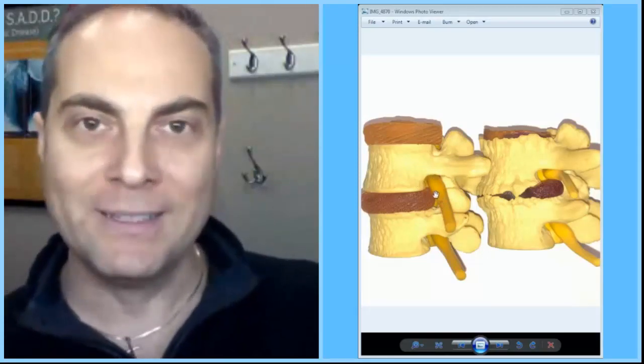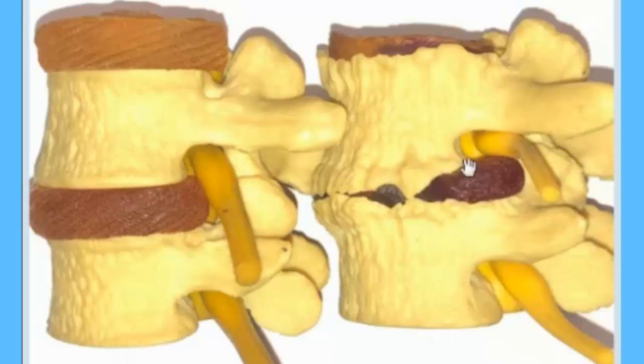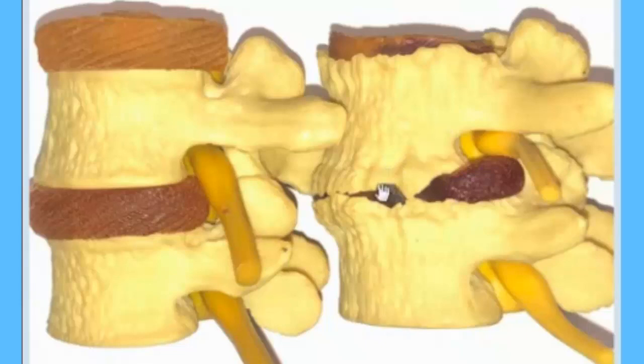Now when there's encroachment, it means that there's degeneration. These bony spurs are signs of degenerative arthritis. This is an advanced degenerative model over here. This occurs in a span of probably 20 to 30 years. This is like stage 3 degeneration; every 10 to 15 years it progresses.